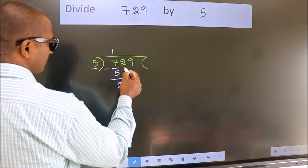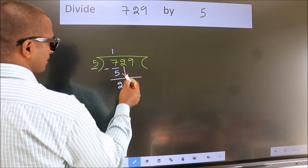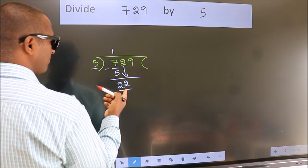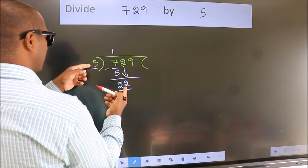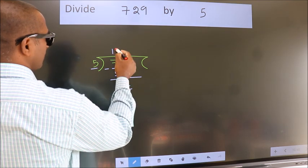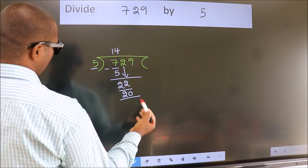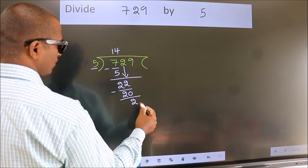After this, bring down the beside number. So, 2 down. So, 22. A number close to 22 in 5 table is 5 fours 20. Now, we subtract. We get 2.